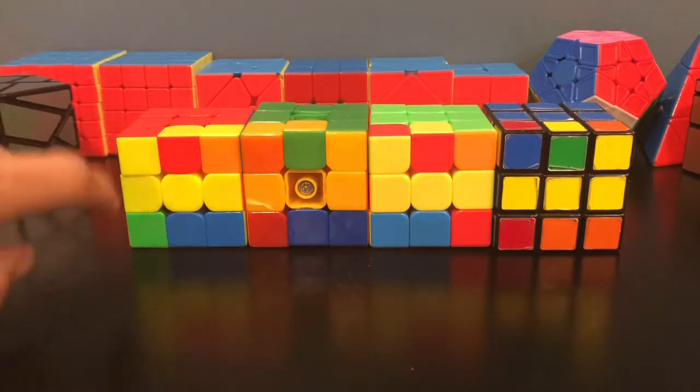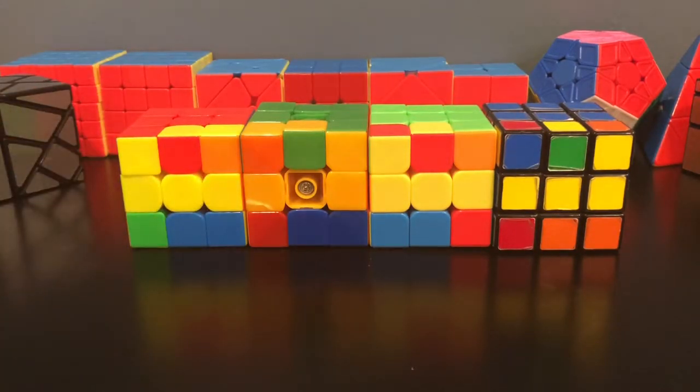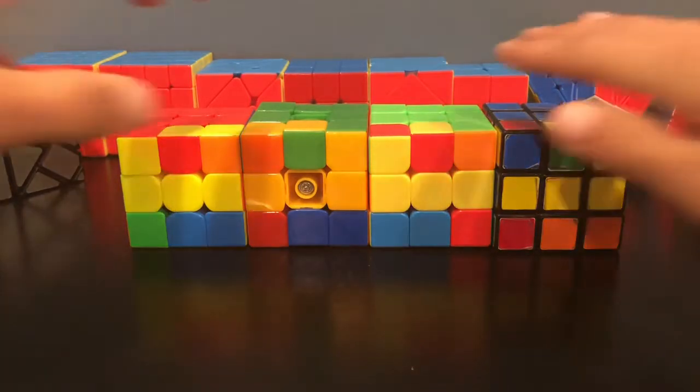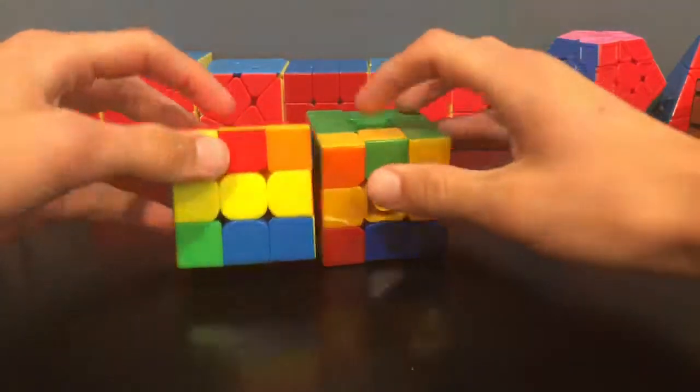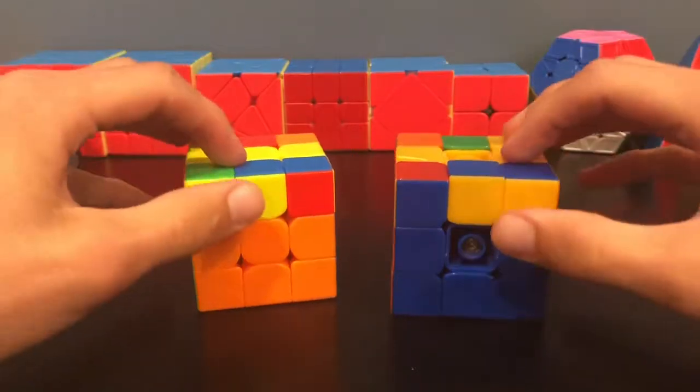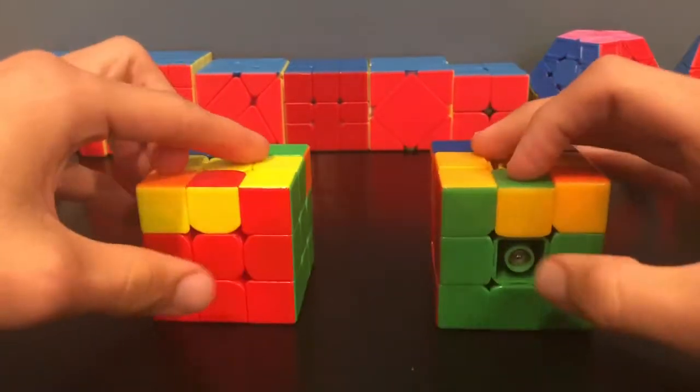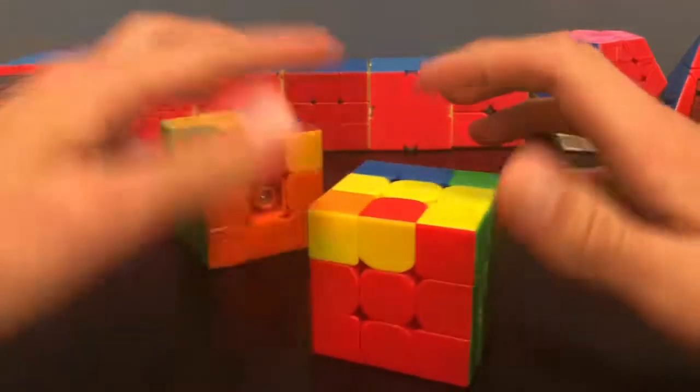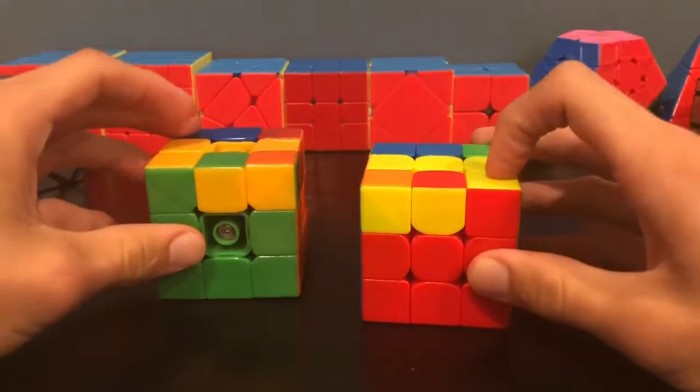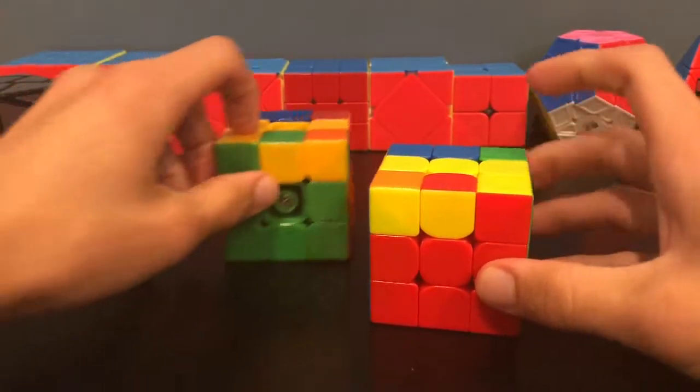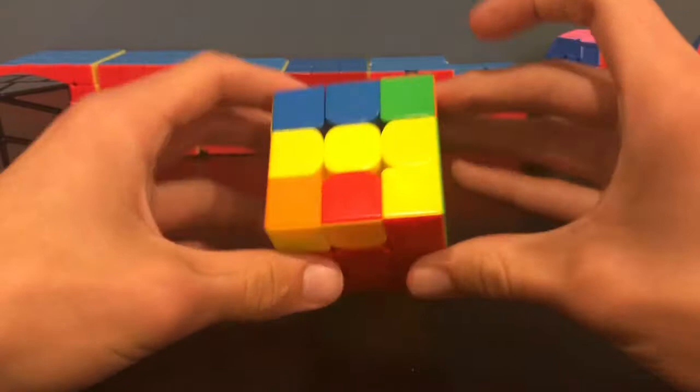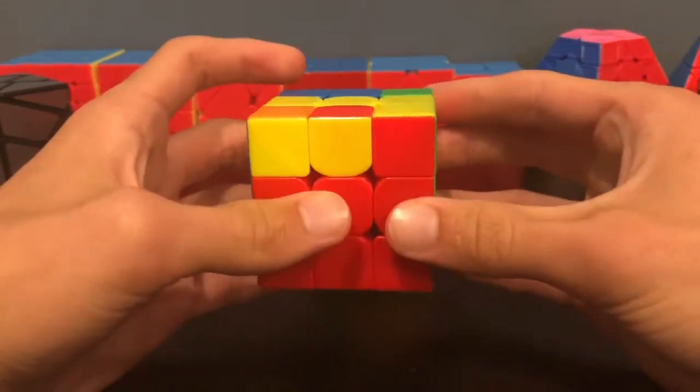These last four cases all have this L block and are very similar. These are probably the hardest ones to recognize, but let's go over the differences now. So first let's go over these two. Notice how these two have blocks of two in the front as well as blocks of two in the back. Also one has a dot on the right or one has a dot on the left. Let's go over this one first. So holding the cube like this, you'll do this algorithm.